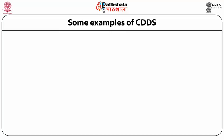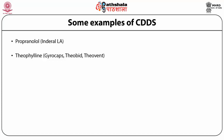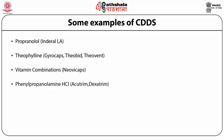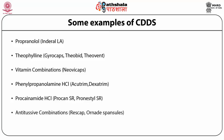The controlled drug delivery system designing is the mover and shaker of the market. Many products are available based on the premise of controlled drug delivery. Examples include propranolol under the name Inderal; theophylline available as Gyrocaps, Theobid, and Theovint; vitamin combinations as Neo-Ycaps; phenylpropanolamine hydrochloride as Ecotrim and Dexatrim; procainamide hydrochloride as Procan-SR and Pronestyl-SR; antitussive combinations as Rescap or Nadespensules; and morphine sulfate under the name Roxanol sustained release.